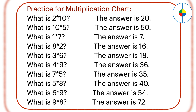What is 9 times 8? 9 times 8 is the same as 8 times 9. Any number multiplied by 9: the 10's position is the number minus 1, and the 1's position is its pair number. For 8 times 9, the 10's position is 8 minus 1 equals 7, and the 1's position is the pair number of 8, which is 2. So the answer is 72.